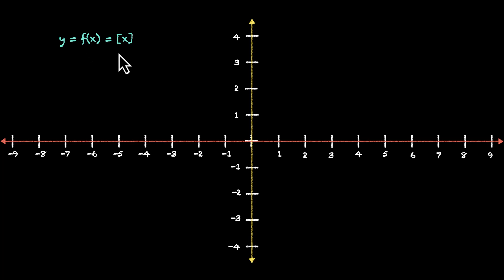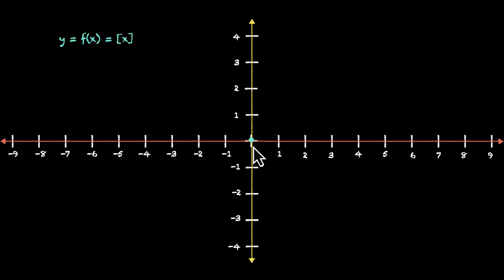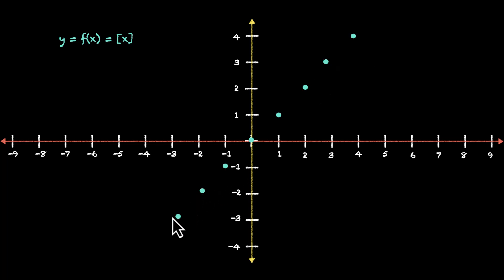Using this definition, we can try plotting the graph. Let's start with the integers — for all integers, we get the same output. So for 0 we get 0, for 1 we get 1, for 2 we get 2, and so on.